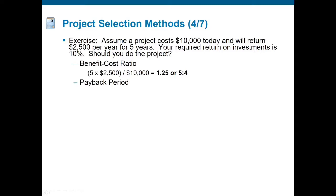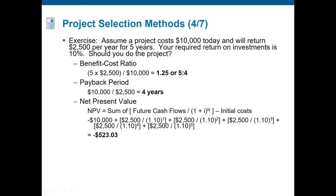Payback period: how long will it take to recoup the initial investment? If we're making $2,500 per year, after four years we'd be able to pay back the original $10,000. For net present value, since we are dealing with inflows by year, each period represents one year's worth of inflow. The net present value here is negative $523.03.